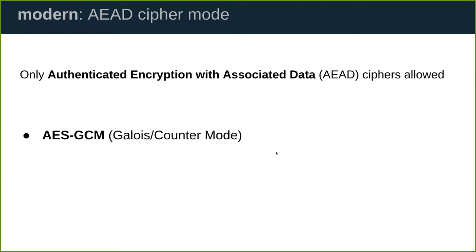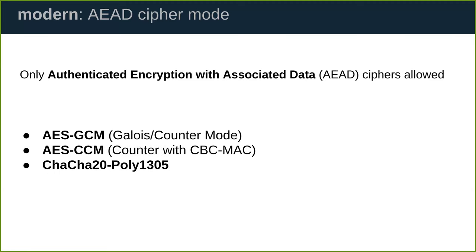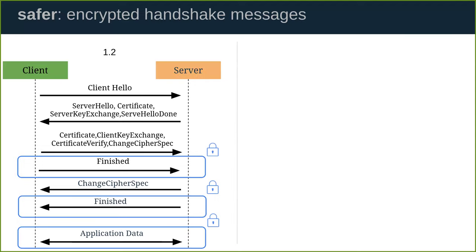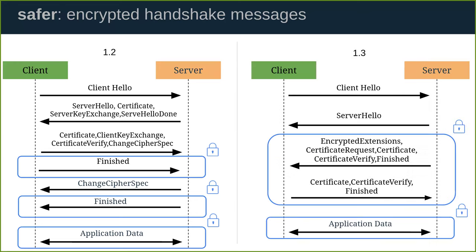TLS 1.3 is also safer because more of the handshake messages are encrypted. Looking at a typical TLS 1.2 handshake on the left, the blue lines show which messages are encrypted. In TLS 1.3, besides the ClientHello and ServerHello, virtually all other handshake messages are also encrypted, allowing for less exposure of privacy-related data and resistance to traffic analysis.